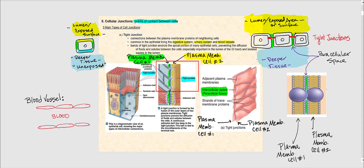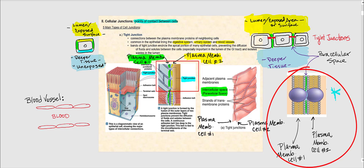The first type of cellular junction is the tight junction. Tight junctions are connections between plasma membrane proteins of neighboring cells. We're looking at the phospholipid bilayer of plasma membrane of cell number one and cell number two. The transmembrane proteins from each cell interlock or connect with each other.